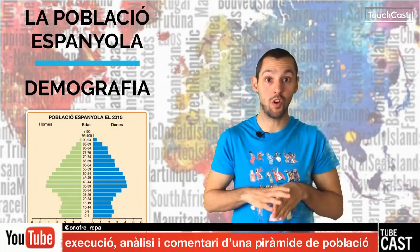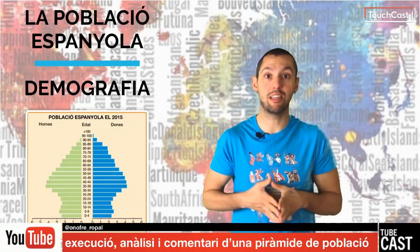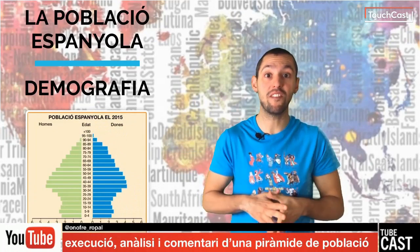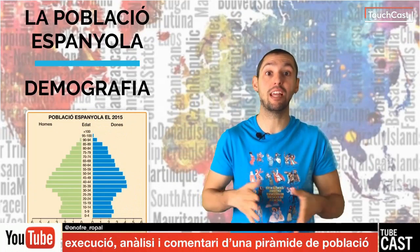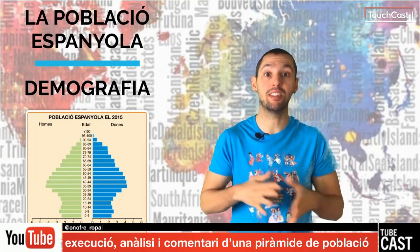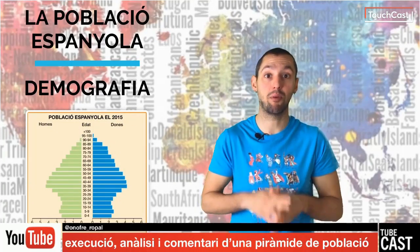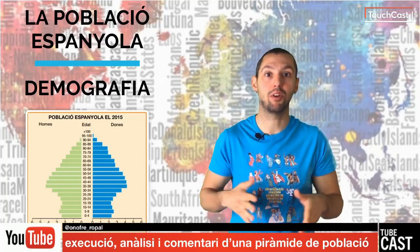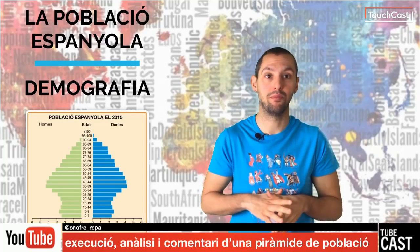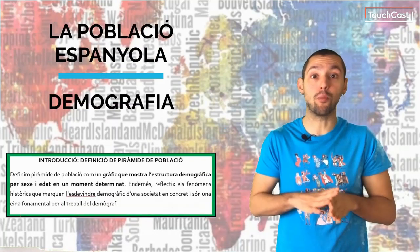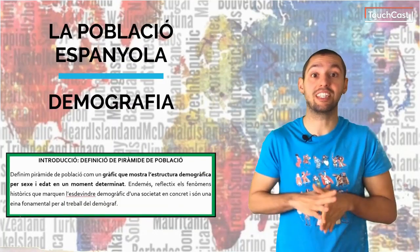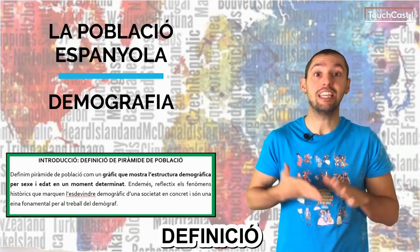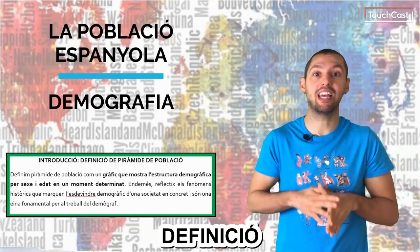Hola a tots i benvinguts a un nou videotutorial. Estem en Geografia d'Espanya de segon de batxillerat, i durant el següent vídeo exposarem com executar, analitzar i comentar una piràmide de població. Un procediment prototípic de les proves PAU. D'entrada, com tots els documents geogràfics que se'ns plantegen, cal fer una definició d'aquest.